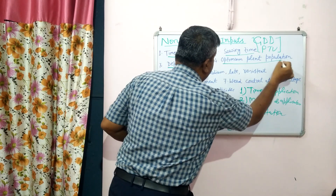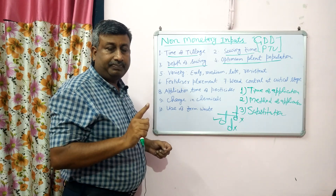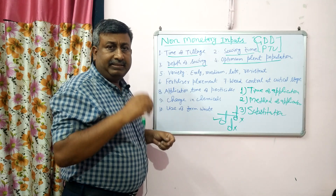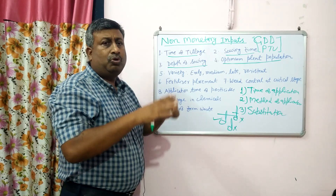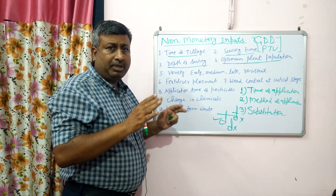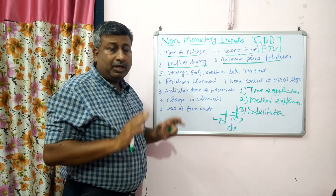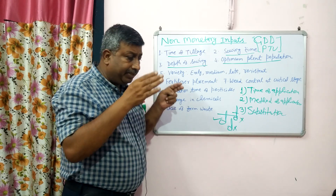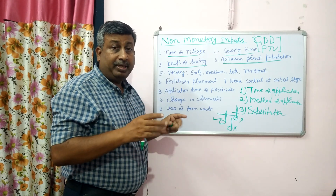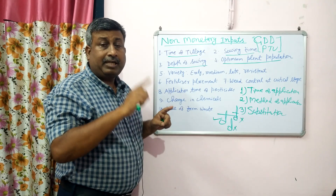Then optimum plant population — when we go for high plant population, there is a high seed rate and high cost. But if we are increasing or decreasing by just two to three kg of seed rate per hectare, there is not much cost difference. If we maintain the optimum recommended plant population, we get optimum yield. Plant population affects interplant competition.